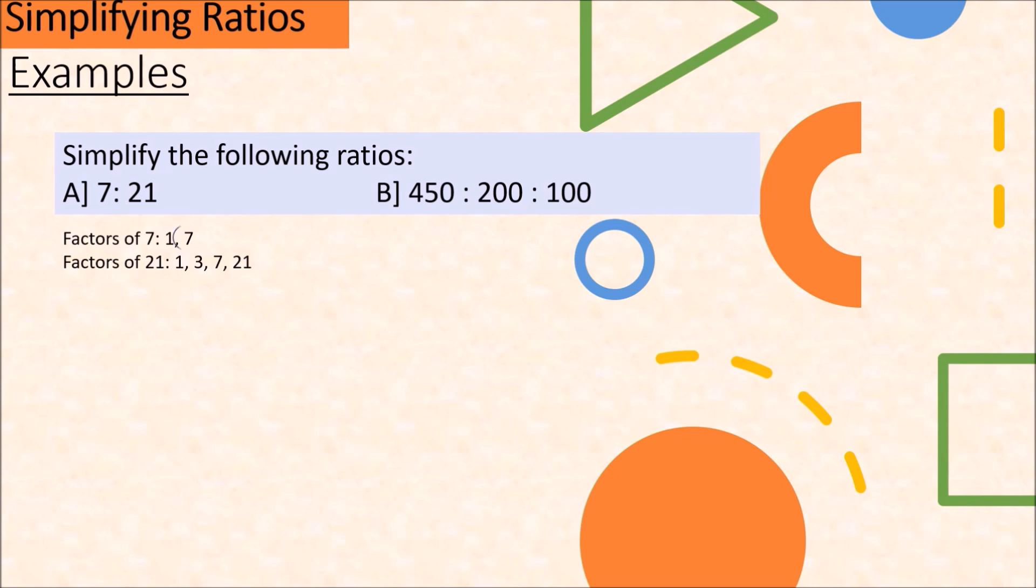And you see that the common factor is 7. So we will divide both terms 7 and 21 by the common factor 7. 7 divided by 7 is 1 and 21 divided by 7 is 3. This means that if we say that we have 7 of something and we have 21 of something else, that is the same as saying that if we have 1 of something, we have 3 of something else.